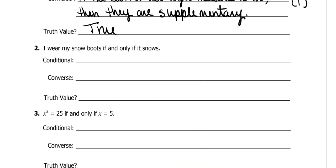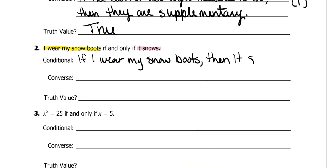'I wear my snow boots' is the hypothesis. So the conditional always starts with 'if,' then you write the yellow: 'If I wear my snow boots, then it snows.' For the converse, the pink goes where the yellow was and the yellow goes where the pink was: 'If it snows, then I wear my snow boots.'